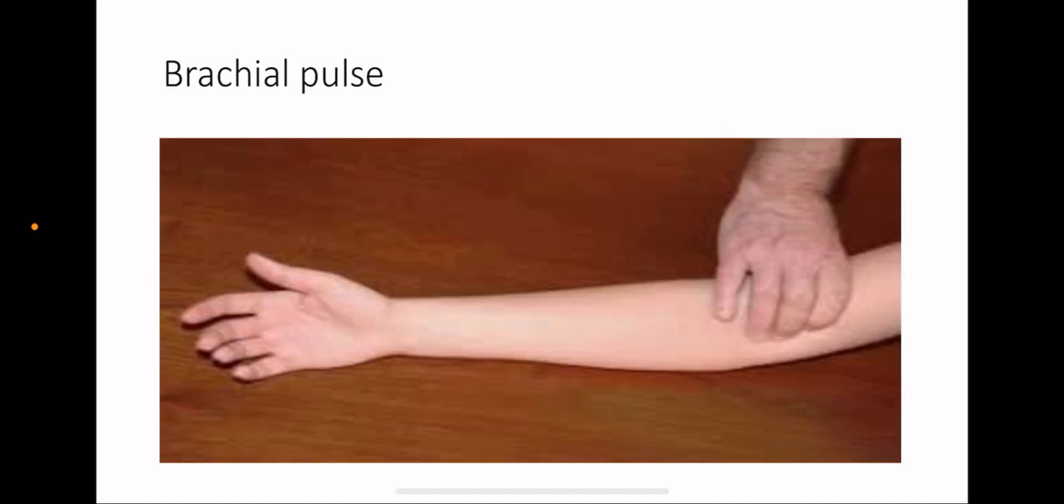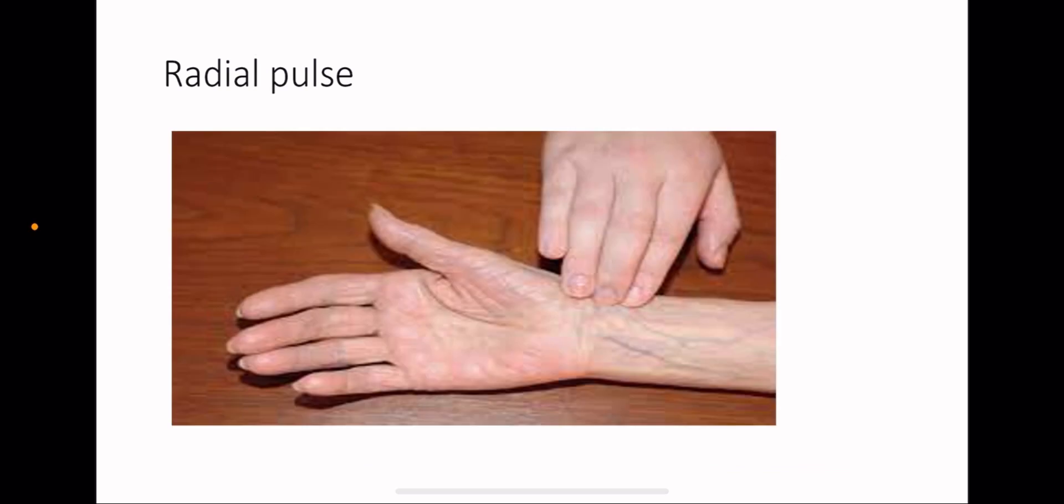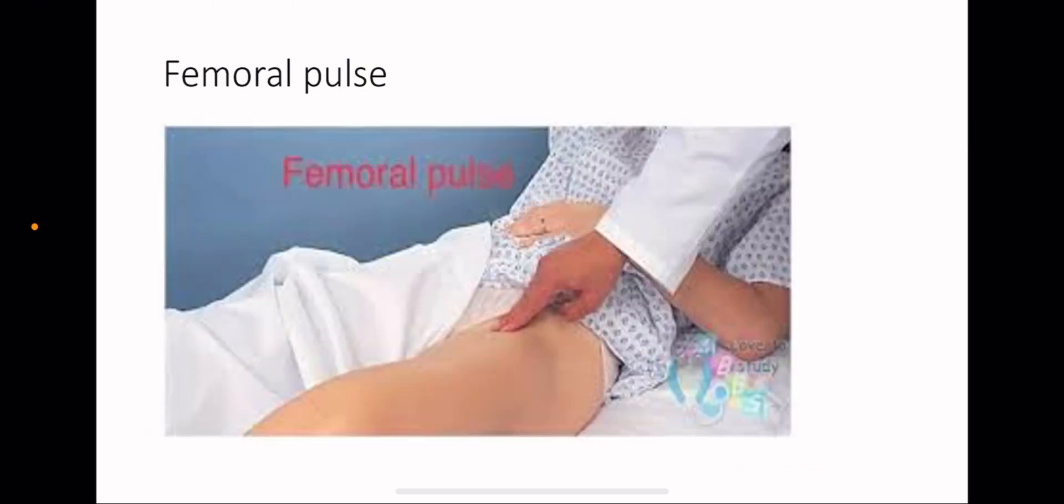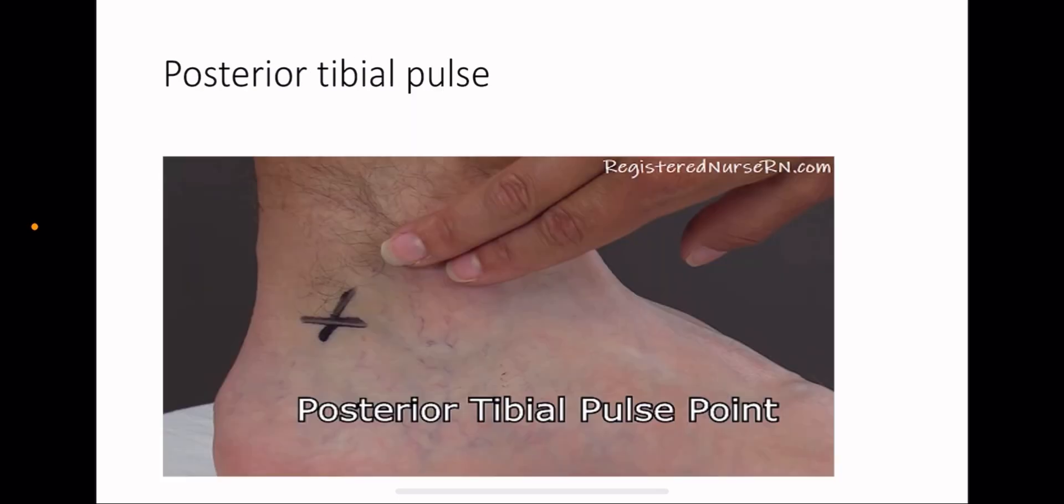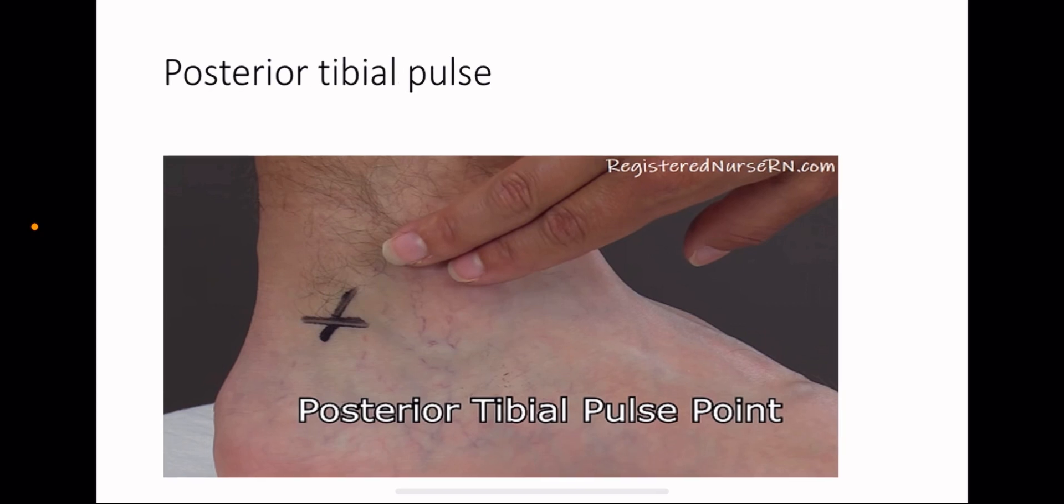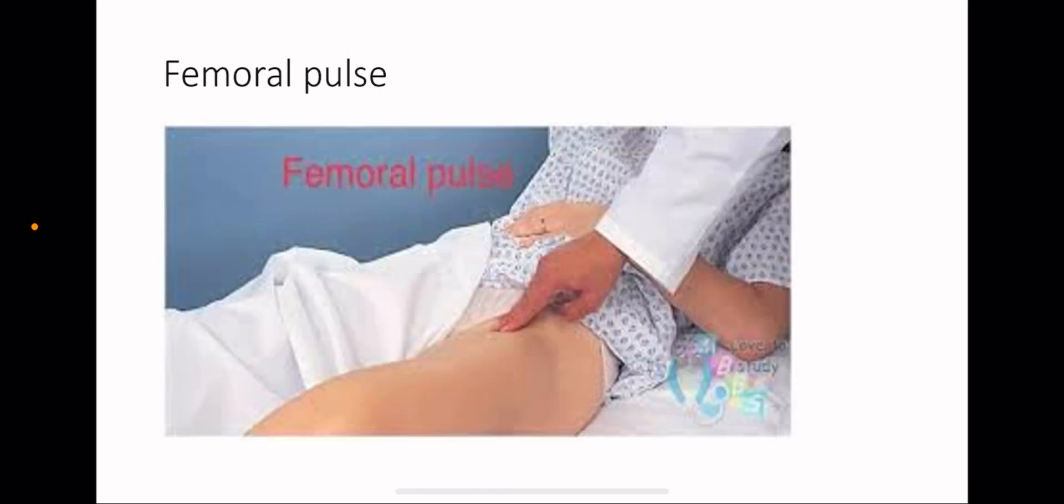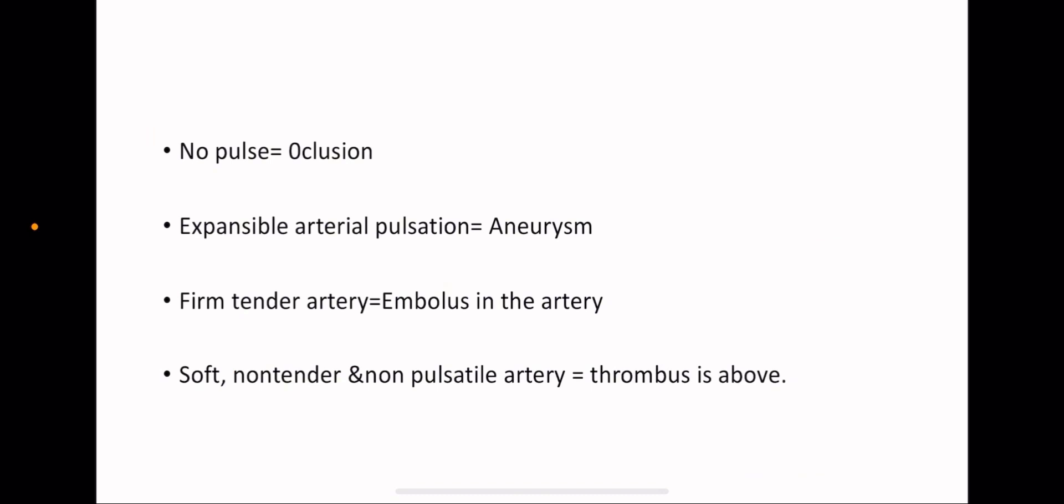This is how we check for the brachial pulse. This is how we check for the radial pulse. This is how we check for the femoral pulse, and then we check for the popliteal pulse, and posterior tibial pulse, and lastly dorsalis pedis pulse.